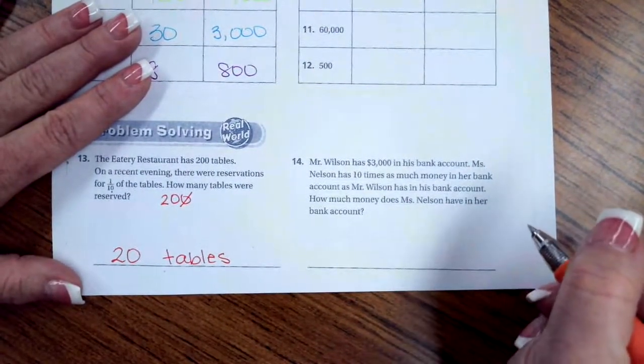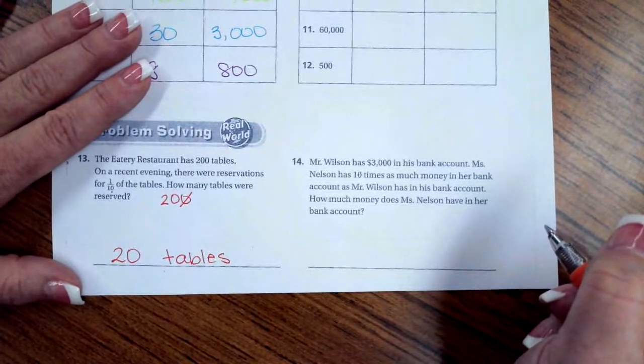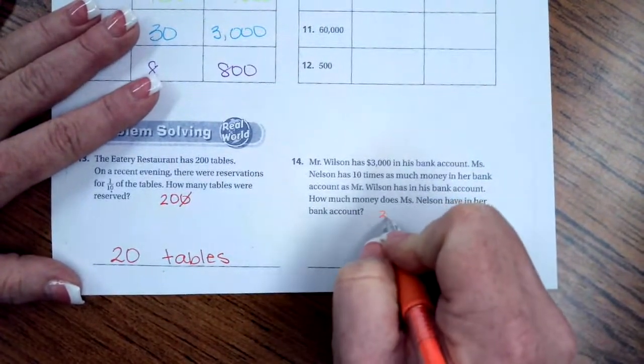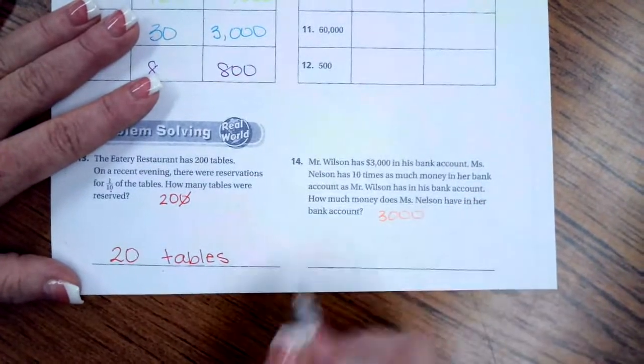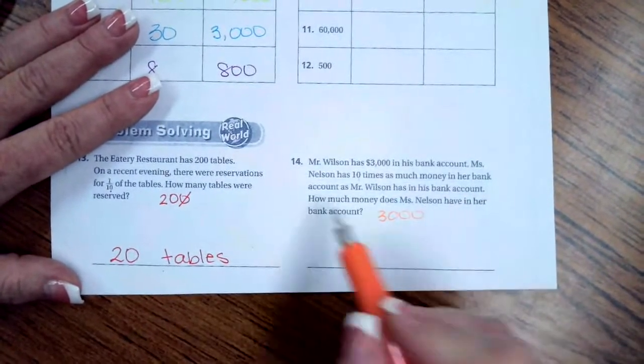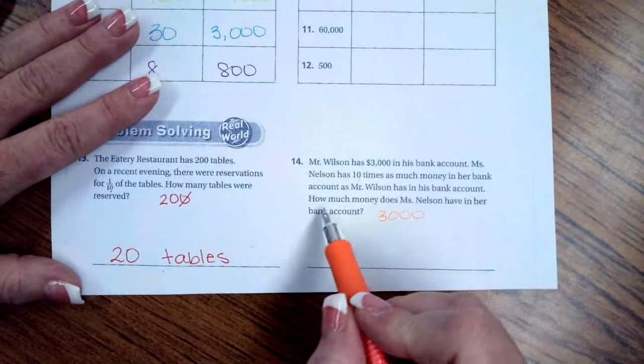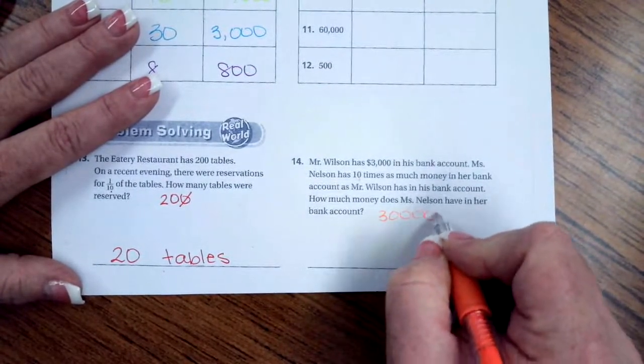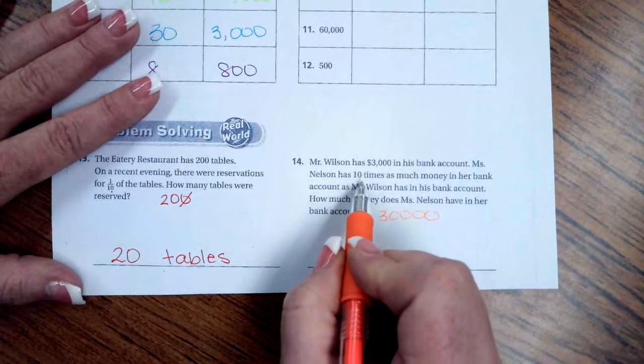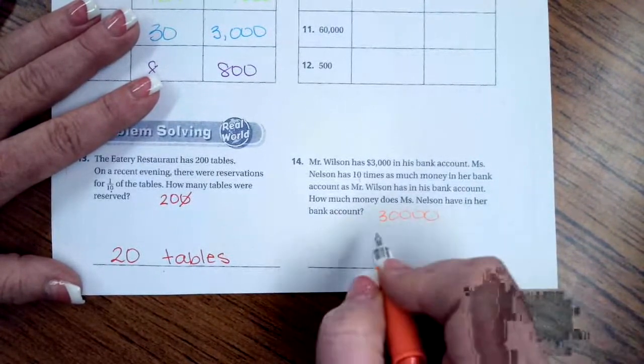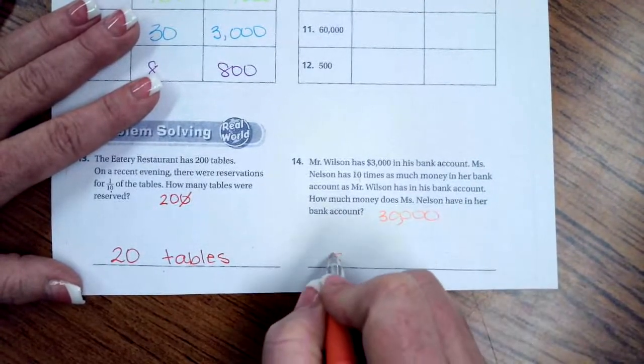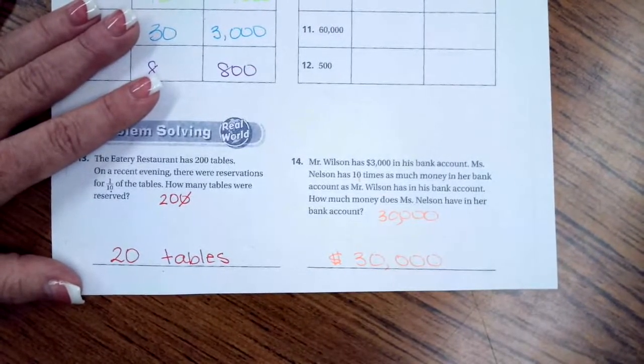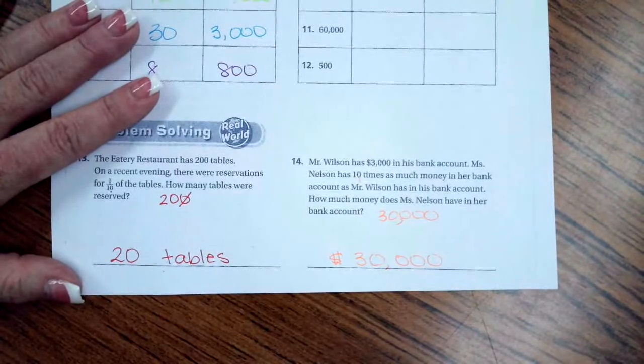Mr. Wilson has $3,000 in his bank account. Ms. Nelson has ten times as much money. So I'm going to take that 3,000, ten times as much. How much money does Ms. Nelson have? Well, we would have to add a zero if she has ten times more. One zero, one zero. So that gives her $30,000. Our dollar sign is our label for that one. So that's all you need to do.